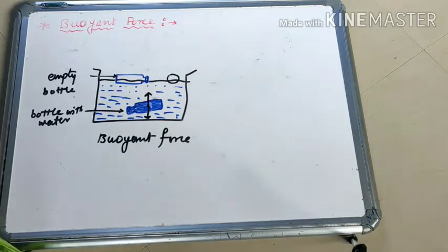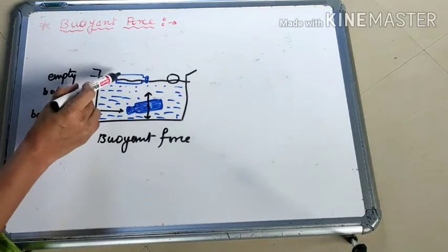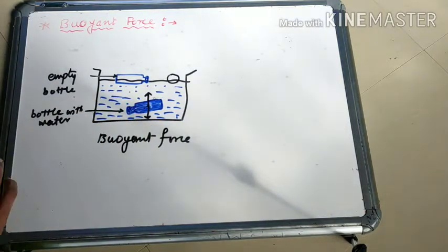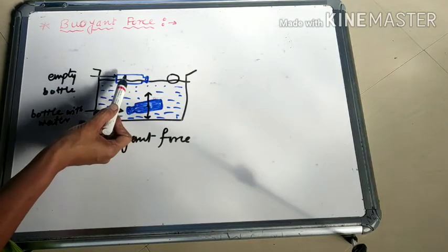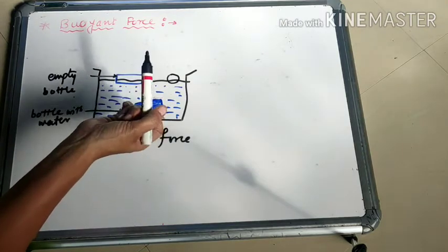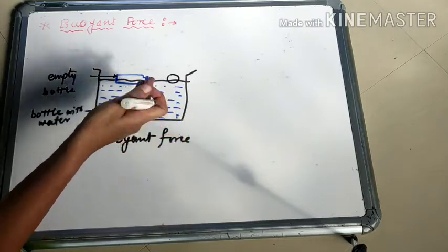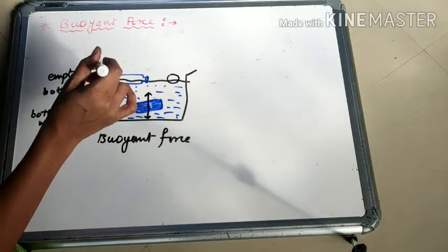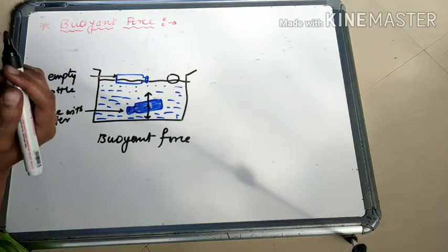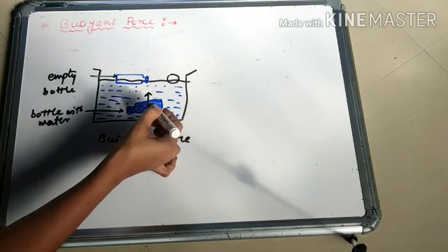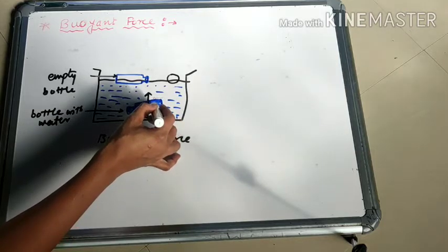Why does this happen? The empty plastic bottle floats on the surface of water. On the contrary, the bottle full of water floats inside the water but does not go to the bottom. The weight of the empty bottle is negligible compared to the weight of the water inside the container, so the bottle filled with water neither floats on the surface nor goes to the bottom.